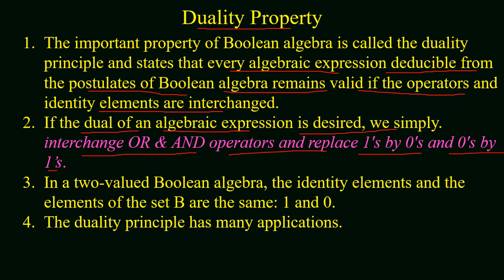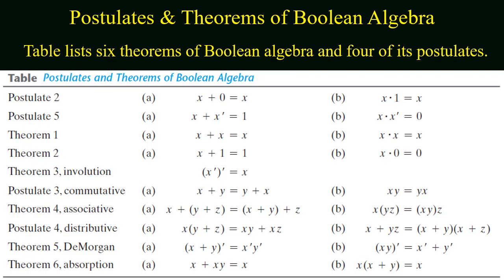In two-valued Boolean algebra, the identity elements and elements of the set B are the same: 1 and 0. The duality principle has many applications and is widely used in simplifying Boolean expressions. The table shows six theorems of Boolean algebra and four of its postulates, where one side has the addition operator and the other side has the multiplication operator — both sides are duals of each other.